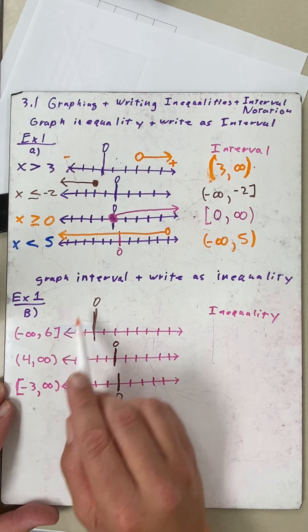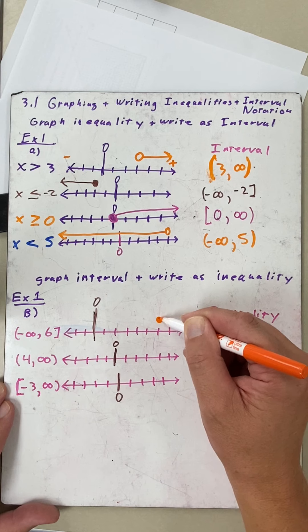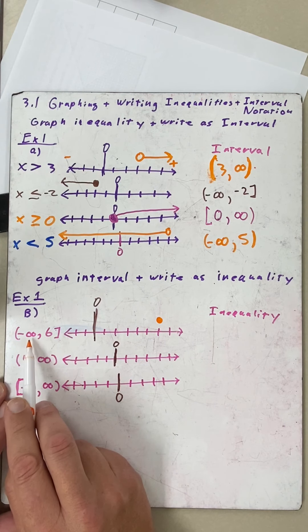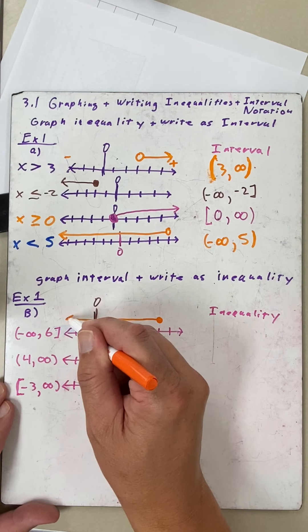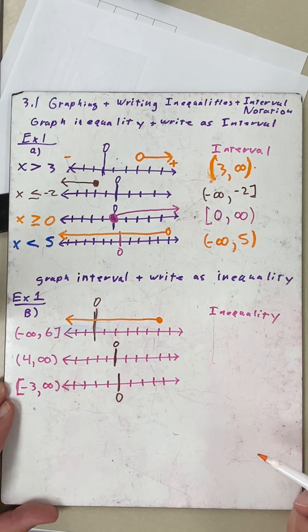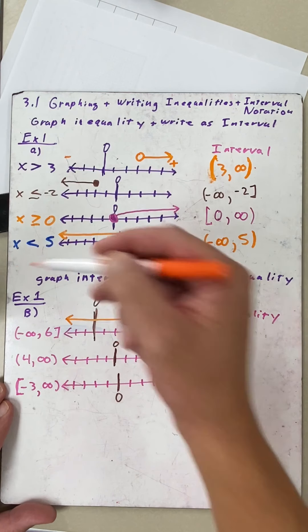Now I'm going to go to six: one, two, three, four, five, six is right here. Remember, bracket is the same thing as a closed circle, so at six I'm going to go closed circle. And then it says go from six to negative infinity, that's to your left.